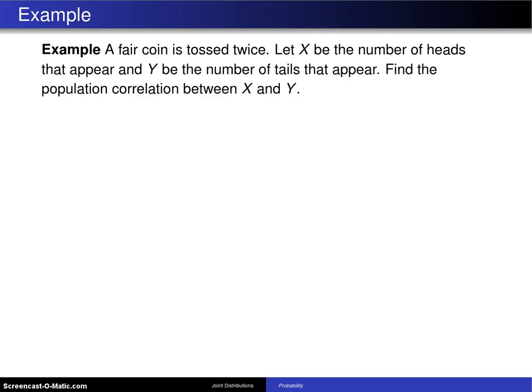Here's an example that involves computing the population correlation. A fair coin is tossed twice. Let X be the number of heads that appear and Y be the number of tails that appear. Find the population correlation between X and Y.